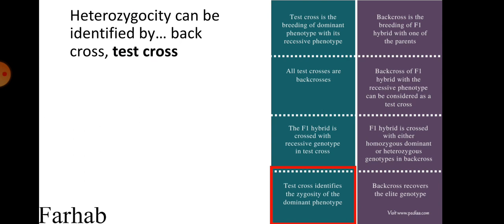Heterozygosity can be identified by test cross. The difference between test cross and back cross is that test cross identifies the zygosity of the dominant phenotype, whereas back cross recovers the recessive genotype. If we have to retrieve the recessive genotype, we do a back cross. If we need to check the heterozygosity of our sample of interest or filial generation, we do the test cross.